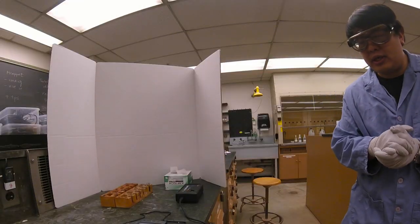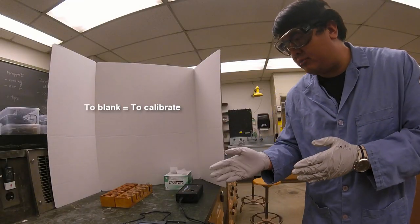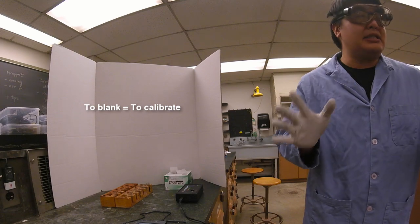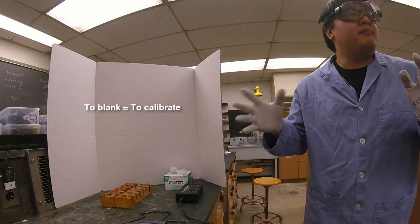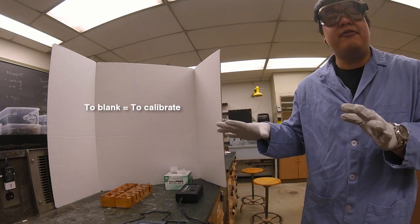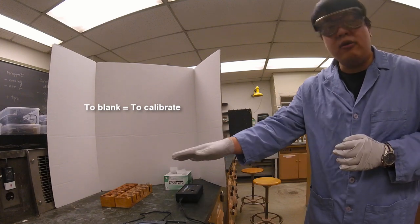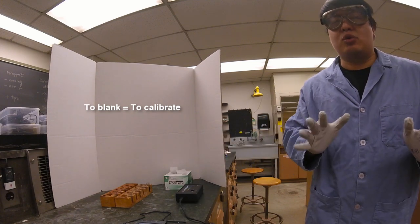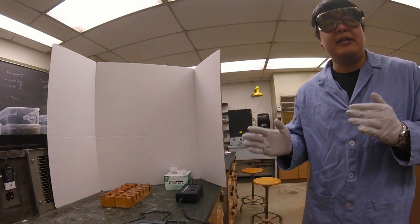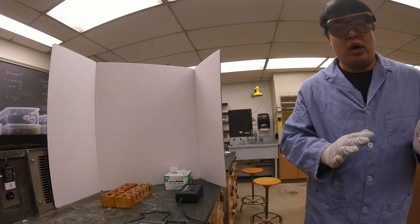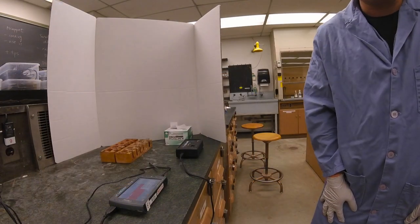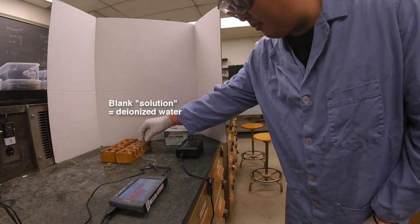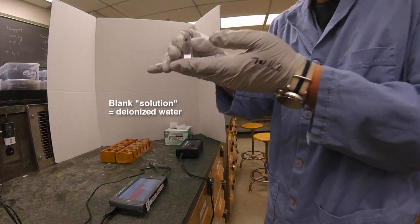The first thing we want to do is blank our machine. What that means is there's a lot of background noise we want to ignore. All our solutions are dissolved in water, but we don't want the absorbance of water, so we're going to specifically blank using water. I'm going to grab the blank from the wooden test tube holder.